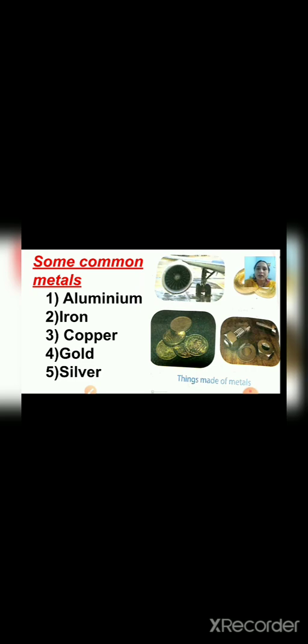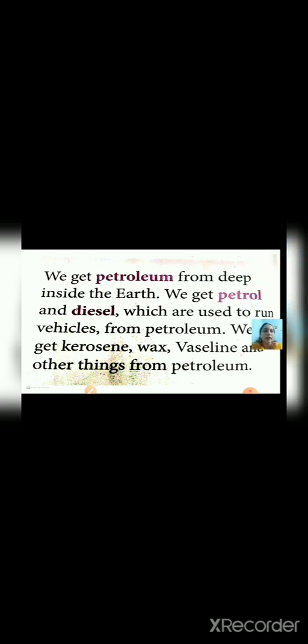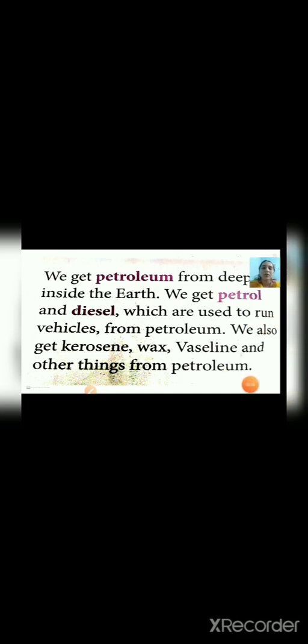We get all metals from the earth. Another important thing we get from the earth is petroleum. We get petroleum from deep inside the earth. We get petrol and diesel, which are used to run vehicles, from petroleum. We also get kerosene, wax, vaseline, and other things from petroleum. These are the important things that we get from petroleum.